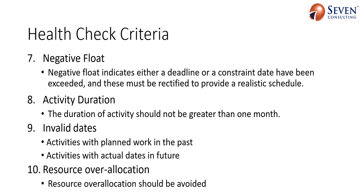The next rule says that the project activity duration should be less than one month. Regarding invalid dates, if you have any activity with planned work in the past or any activity with actual dates in the future, that represents either that the project has not been updated correctly or the project activities are being entered with future dates. You should remove these kinds of entry errors from your project schedule.